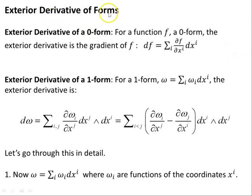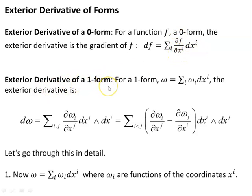The exterior derivative of a zero form — for a function f — is the gradient of f: df equals sigma i, partial f over partial x i, dx i. The exterior derivative of a one form: for omega equals sigma i, omega i dx i, the exterior derivative is d omega equals sigma ij, partial omega i over partial x j, dx j wedge dx i.